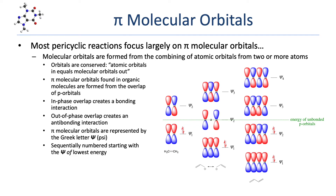The study of pericyclic reactions relies heavily on a firm understanding of some basic molecular orbital theory. Molecular orbitals are formed from the combination, or overlap, of atomic orbitals from two or more atoms. The number of orbitals involved is conserved — if two atomic orbitals combine, two molecular orbitals are formed. In organic chemistry, pi molecular orbitals are formed from the overlap of p-orbitals. Adjacent orbitals overlapping in phase result in a bonding interaction, while adjacent orbitals overlapping out of phase result in an anti-bonding interaction. Pi molecular orbitals are often represented by the Greek letter psi and are sequentially numbered starting with the orbital of lowest energy. The figure here shows three common pi molecular orbital systems.